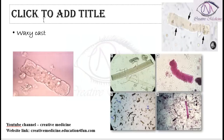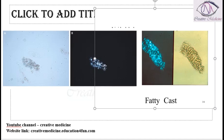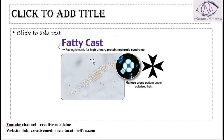These are waxy casts, where a wax-like homogenous structure is seen. Fatty casts are also seen; on immunofluorescent microscopy you can clearly see the fatty cast. One feature that is pathognomonic of fatty casts is the presence of a Maltese cross pattern, which is characteristic of fatty casts.